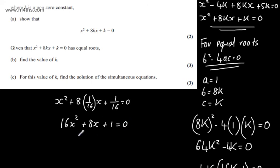This is going to factor to a perfect square and we'll have 4x plus 1 all squared is equal to 0. So from here we can see that x is equal to minus 1 quarter.